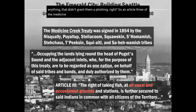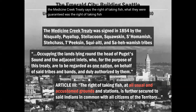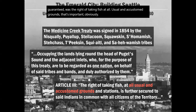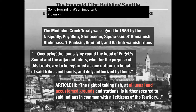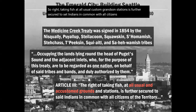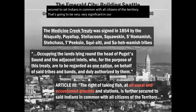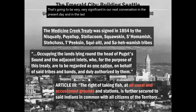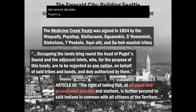Article Three of the Medicine Creek Treaty states: 'The right of taking fish at all usual and accustomed grounds and stations is further secured to said Indians in common with all citizens of the territory.' That provision is going to be very significant in the present day and especially over the last several decades — there's a lot of legal significance to it that we'll be discussing.